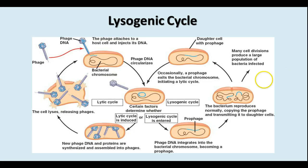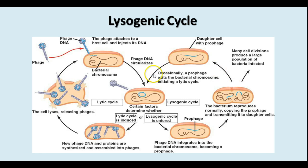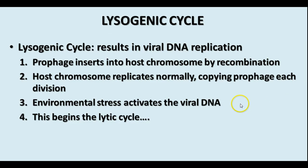The lysogenic cycle is more complicated. Viruses that go into a lysogenic cycle may stay in that phase for weeks, months, even many years before becoming active again. The prophage integrates into the bacterial chromosome, and every time the bacterium replicates it replicates that DNA as well. At some point the prophage exits the bacterial chromosome, becomes active, and makes the cell start producing more viruses. Steps: the prophage inserts into the host chromosome, the host chromosome replicates normally copying the prophage every time, then some environmental stress activates the viral DNA and begins the lytic cycle.